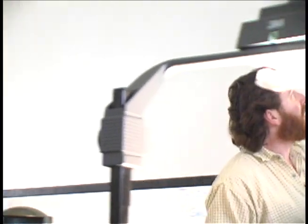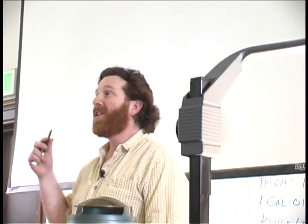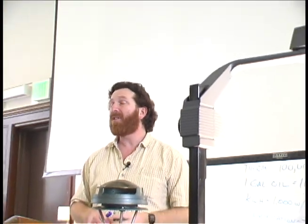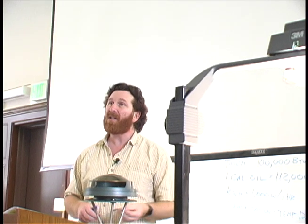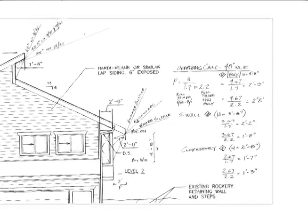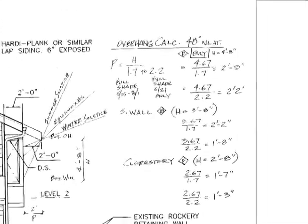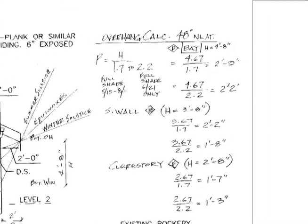Let's go to overhang calculations. It's nice to see it graphically, but it's also nice to have the actual calculation up here. This calculation is good for 48 degrees north latitude. If you're somewhere else, give me a call and I'll look it up. The numbers 1.7 and 2.2 are based on this latitude — those are constants.